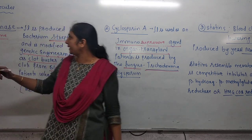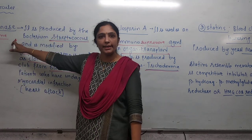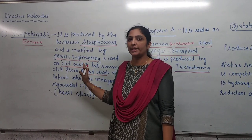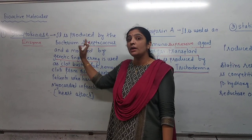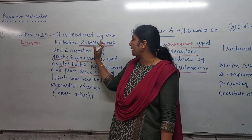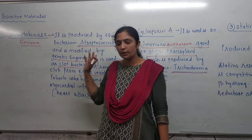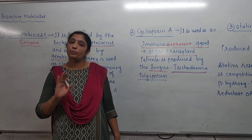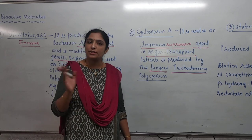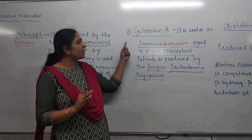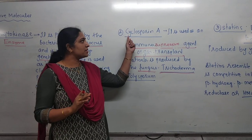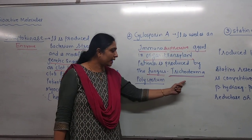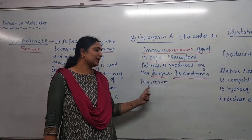So first we noted streptokinase — its use is as a clot buster, degrading clots. What is the source? Streptokinase comes from Streptococcus. Keep these things in mind; it is very important for exams as well as for multiple choice or match-the-pair questions. The source of cyclosporin — you must remember — it is Trichoderma polysporum.